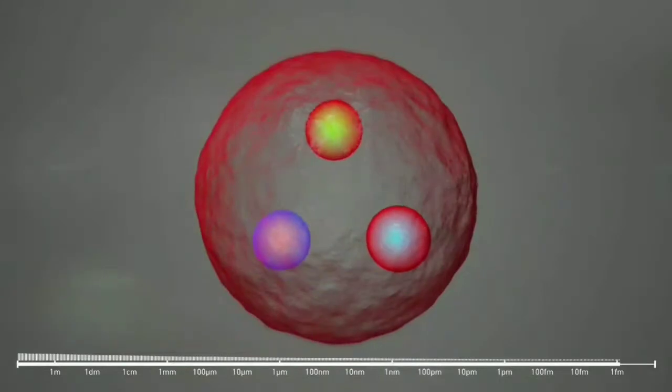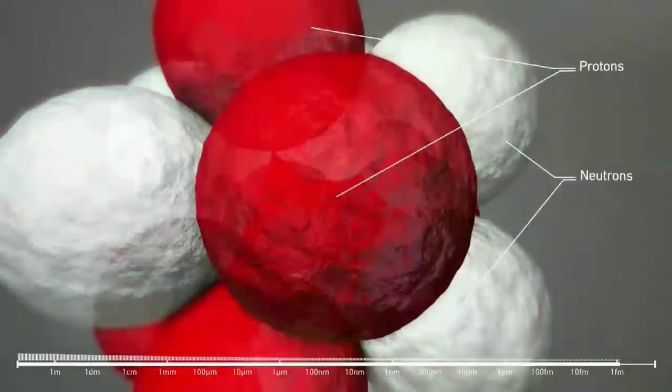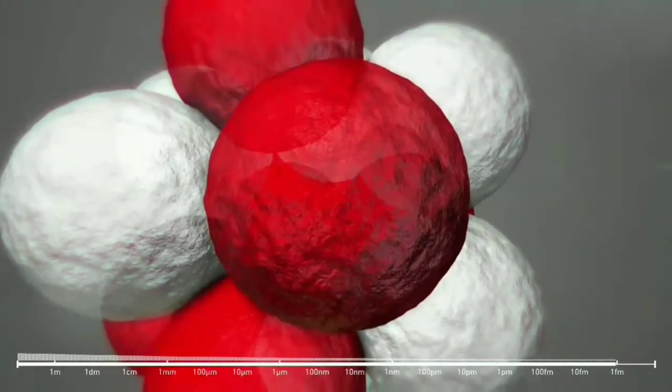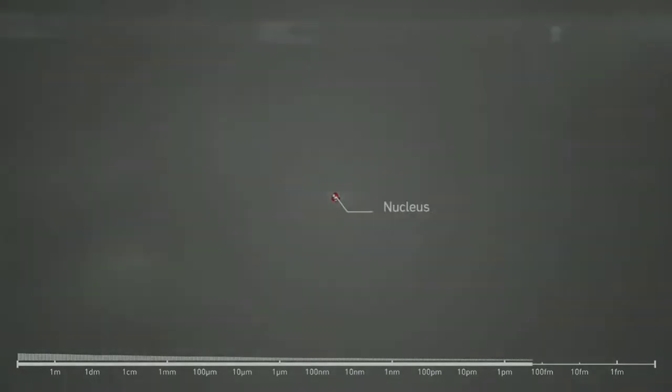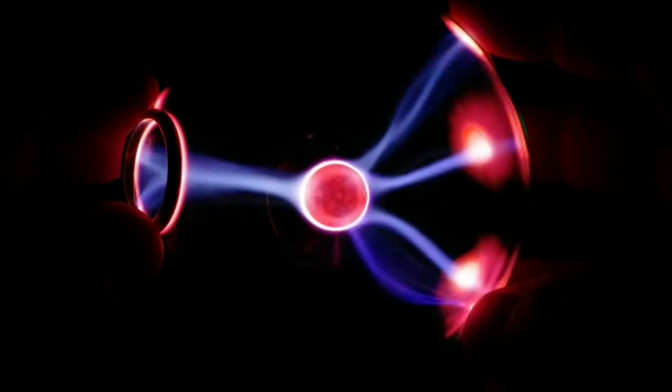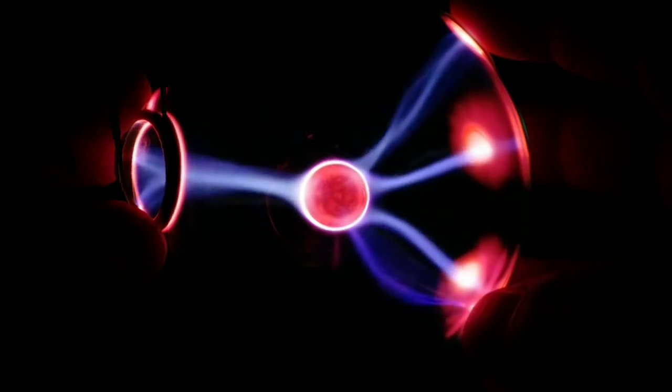To explain this, Rutherford proposed that the positive charge of the atom is not distributed throughout the atom's volume, as Thomson believed, but is concentrated in a tiny nucleus at the center. Only such an intense concentration of charge could produce an electric field strong enough to deflect the alpha particles, as observed.